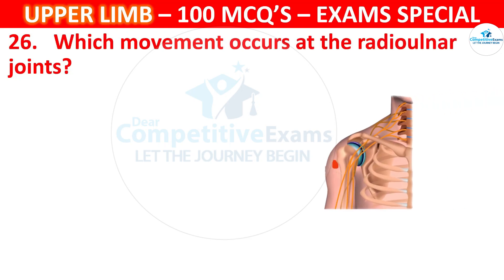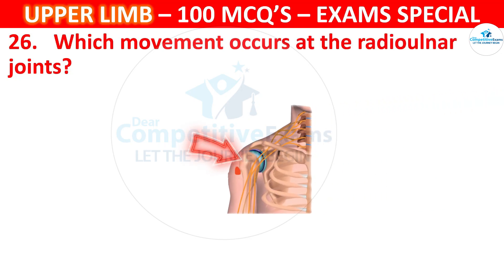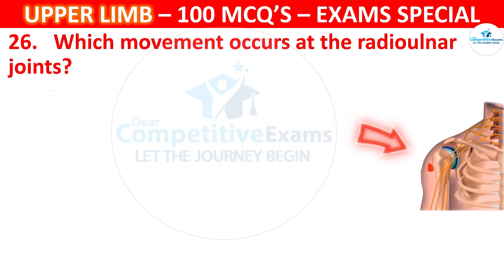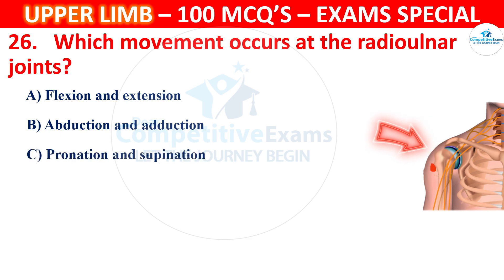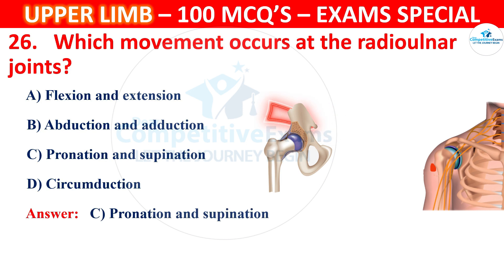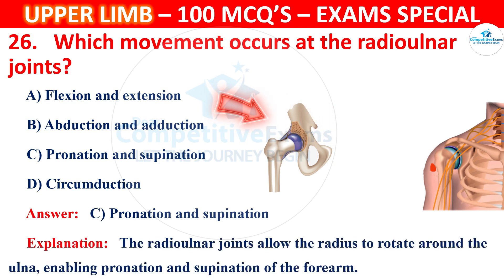Which movement occurs at the radio-ulnar joints? Options: flexion and extension, abduction and adduction, pronation and supination, or circumduction. The correct answer is C, pronation and supination. The radio-ulnar joints allow the radius to rotate around the ulna, enabling pronation and supination of the forearm.